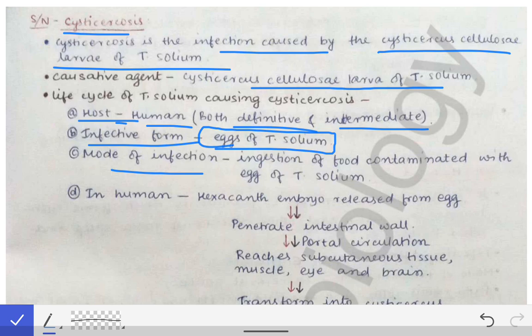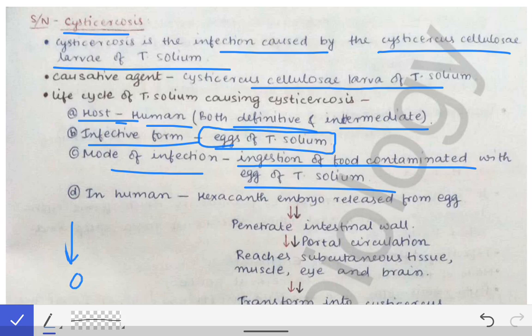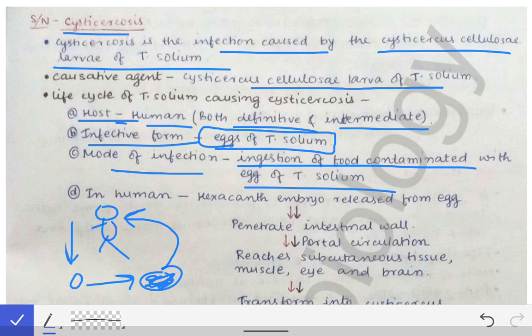The mode of infection is ingestion of food contaminated with eggs of Taenia solium. These eggs are released only by a person who already has a GIT infection of Taenia solium. That person releases eggs through feces, the feces contaminates food, and when another human ingests that contaminated food, the eggs enter that human, resulting in cysticercosis infection.